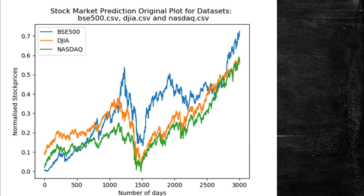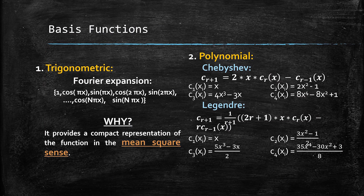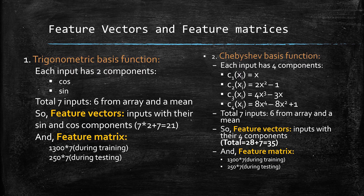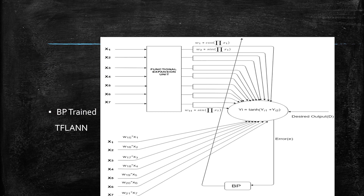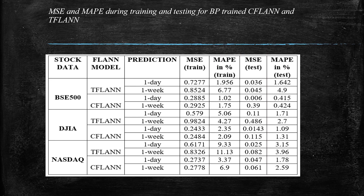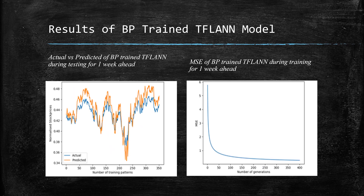The BPN and Jaya algorithm trained FLAN models are examined for predicting stock indices for one day ahead and a week ahead. The stock indices BSE500, DJIA, and NASDAQ, with a few technical indicators, are taken as input in this experimental time series data.